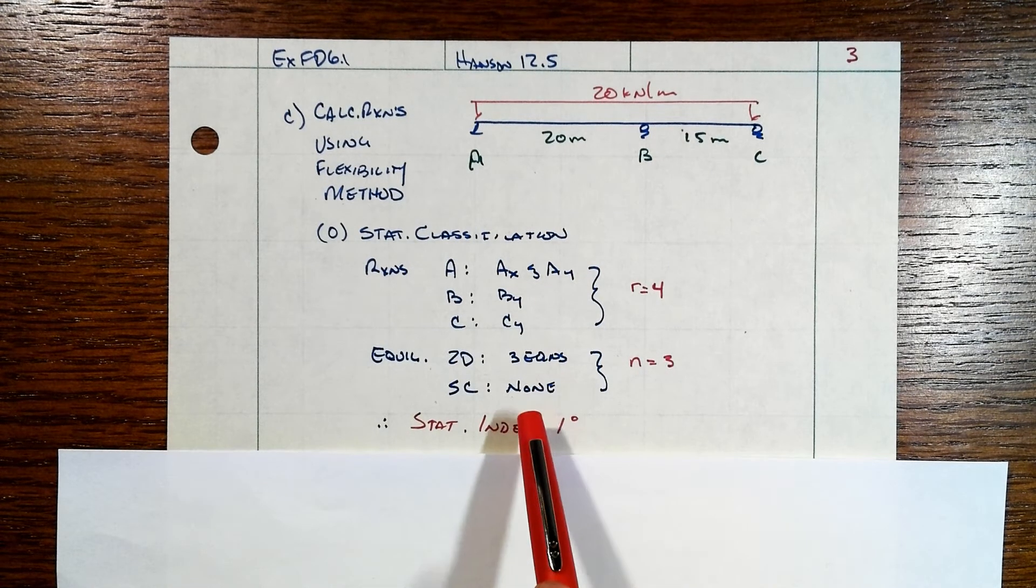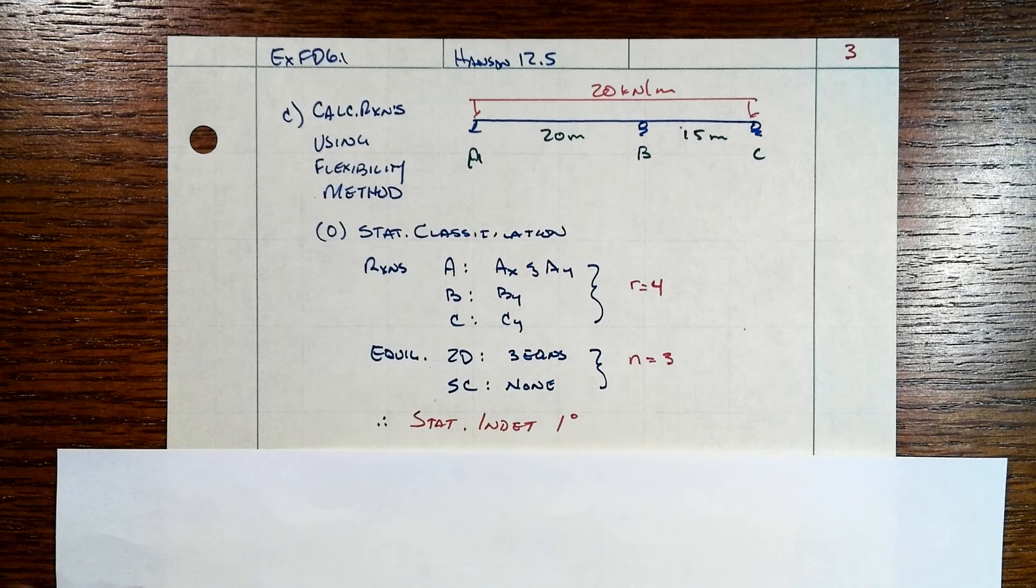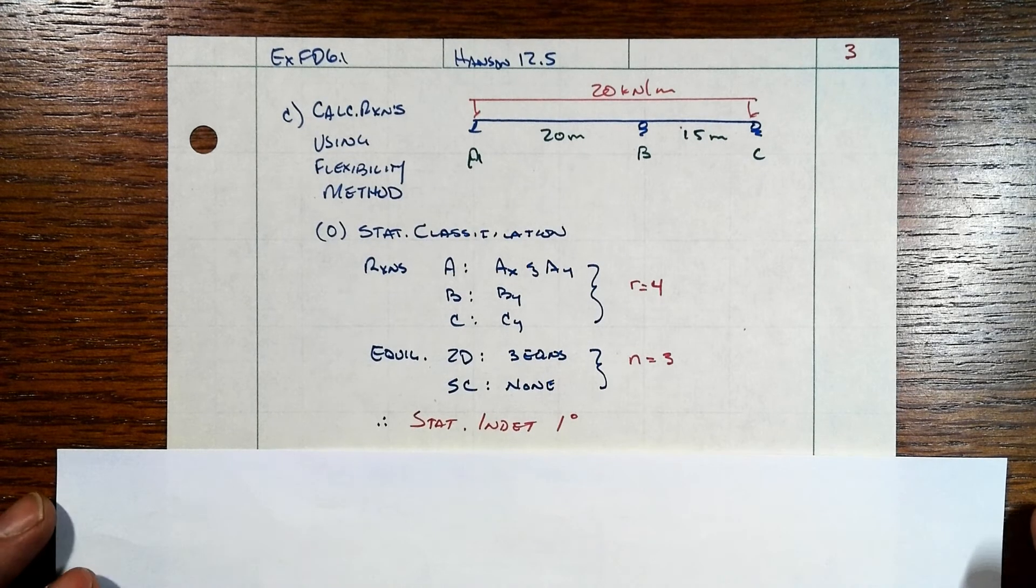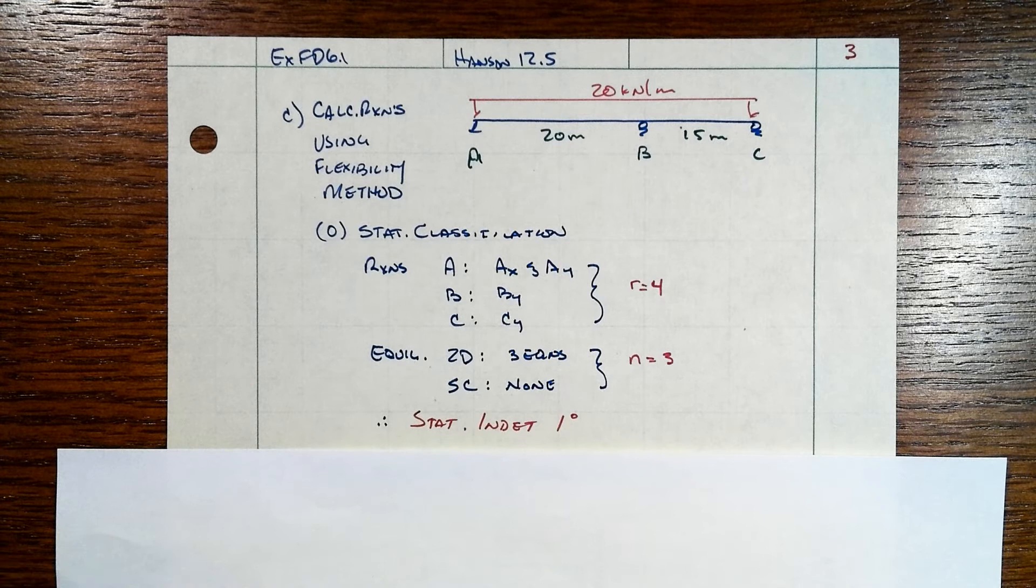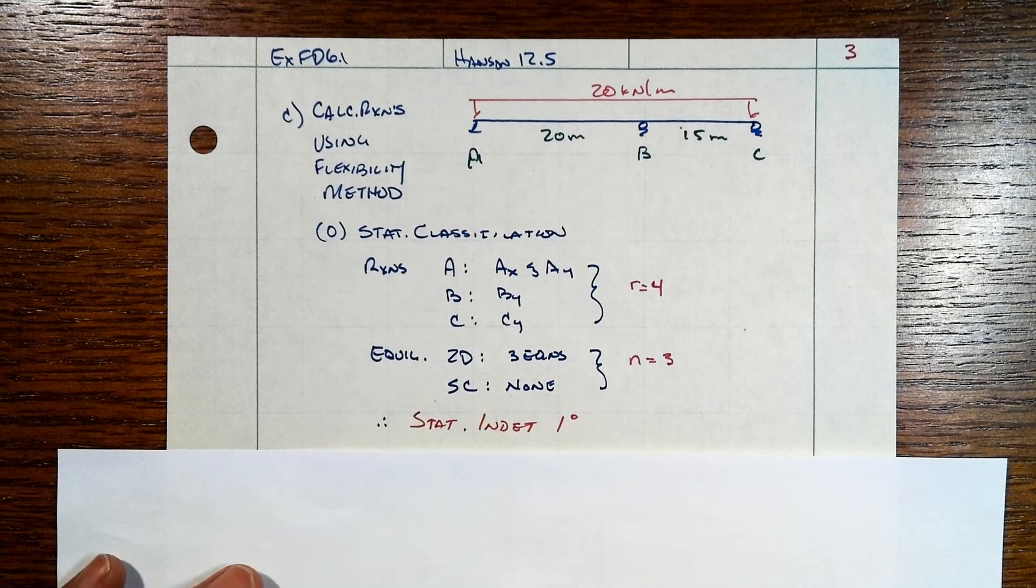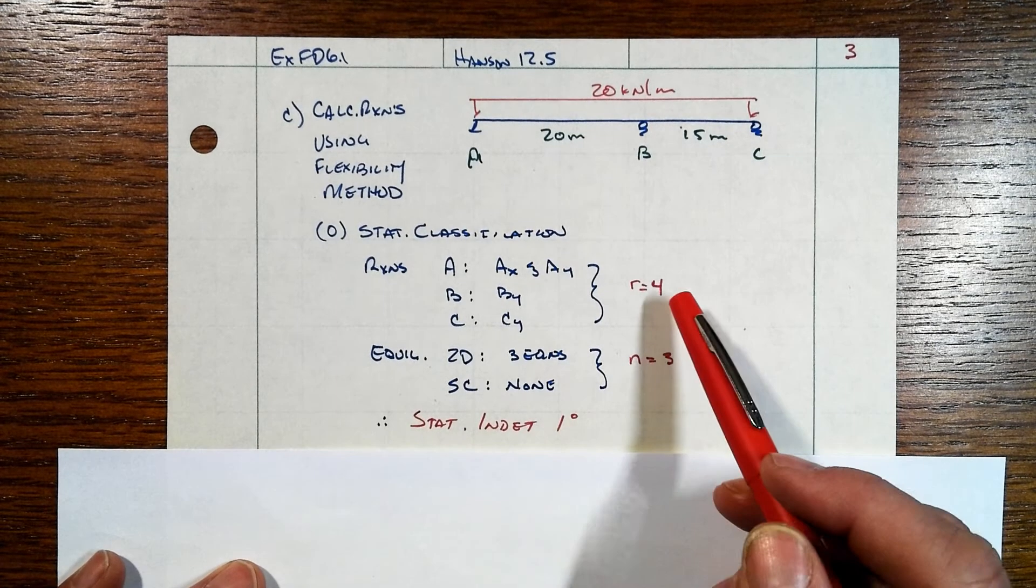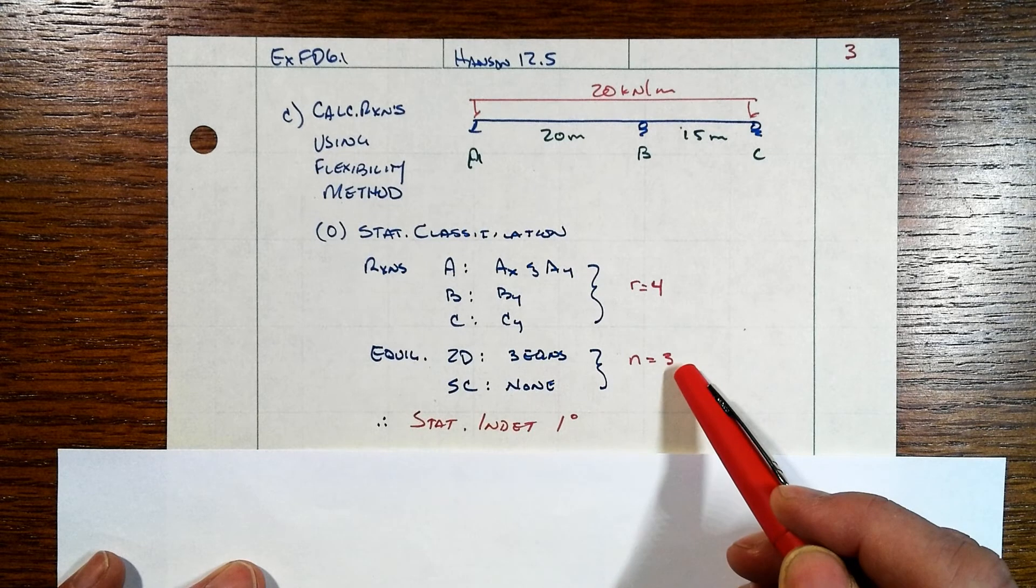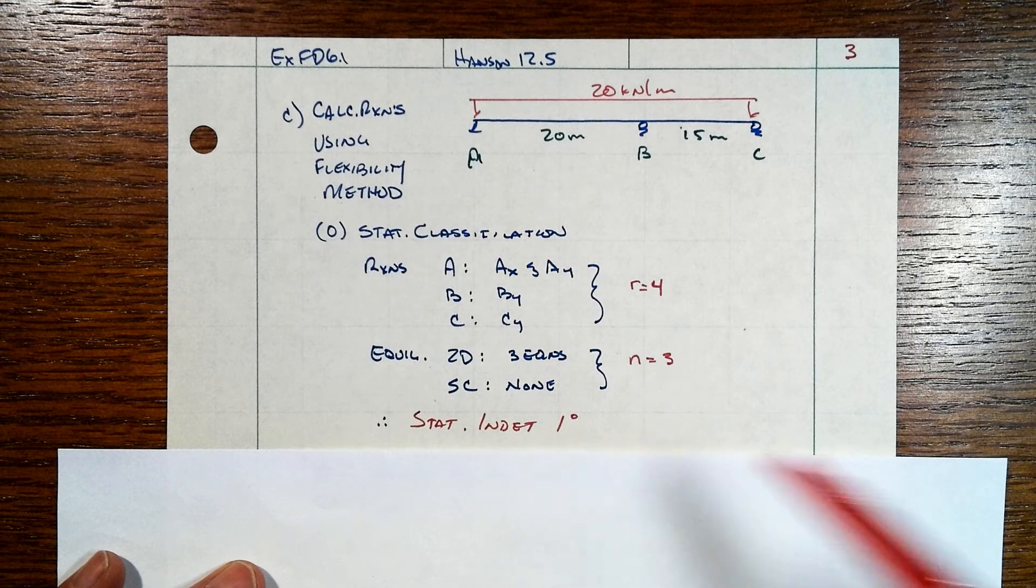And we don't have any special conditions such as hinges or anything else that specify that some sort of internal force value has to be a particular value or a particular relationship. So, in other words, we have four unknowns. We have three equations of equilibrium. That's what we call statically indeterminate to the first degree.